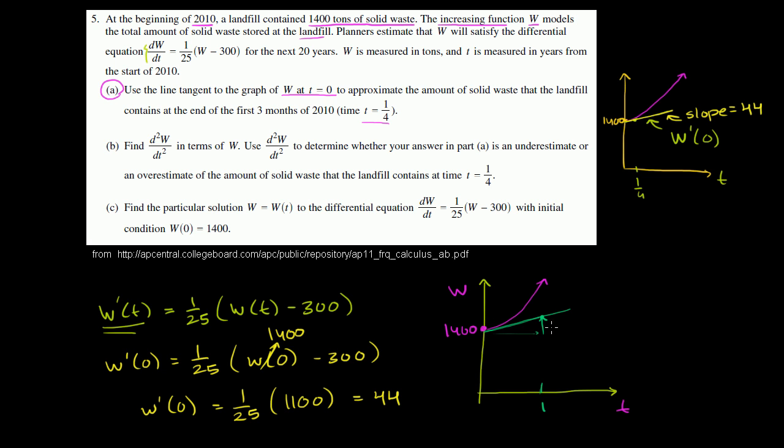But we're not trying to approximate a year out. We're trying to approximate a fourth of a year out. So we're trying to approximate, so this would be half a year out, this is 1 fourth of a year out. We're trying to approximate that point right over there. So it's going to be 1,400. This point right over here.